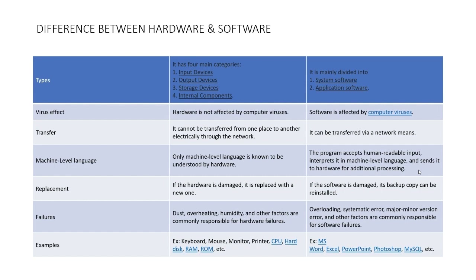Hardware is not affected by computer viruses, but software is. Hardware cannot be transferred electrically through a network, but software can be transferred via network. Only machine-level language is understood by hardware; software accepts human-readable input, interprets it into machine-level language, and sends it to hardware. If hardware is damaged, it is replaced with a new one; if software is damaged, a backup copy can be reinstalled. Hardware failures are caused by dust, overheating, and humidity; software failures by overloading, systematic errors, and version errors.